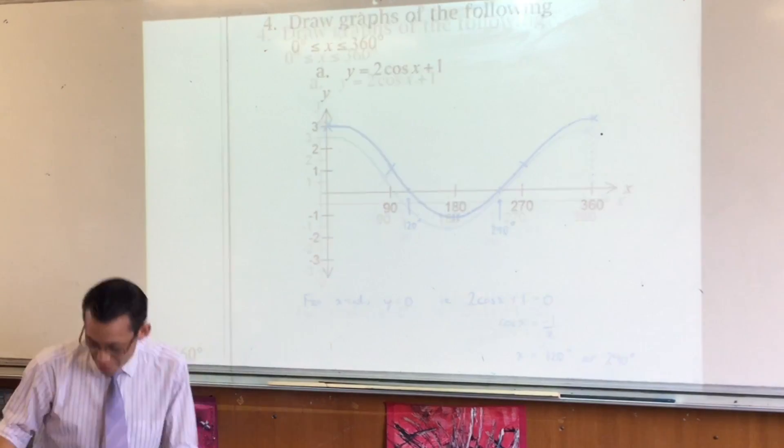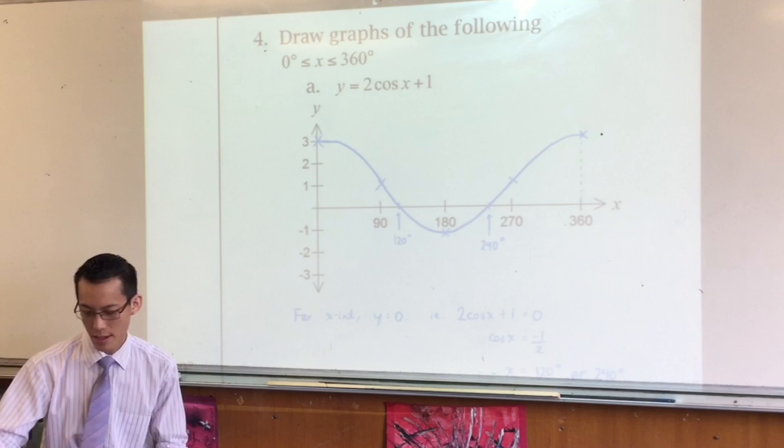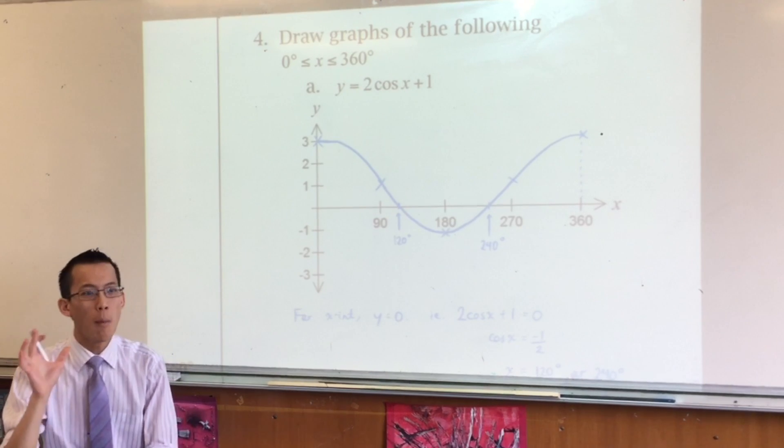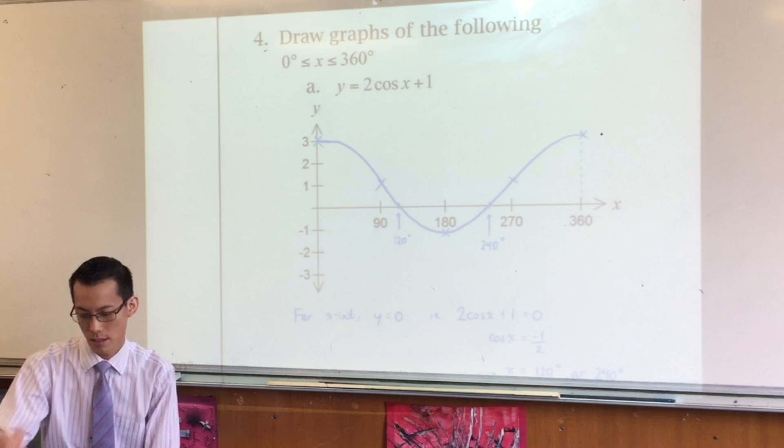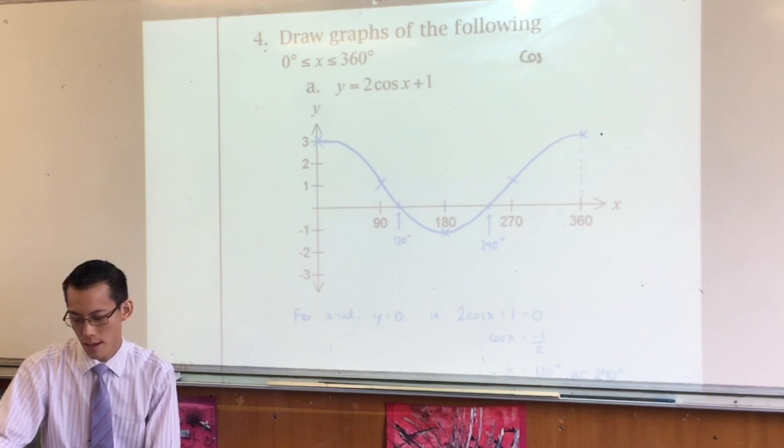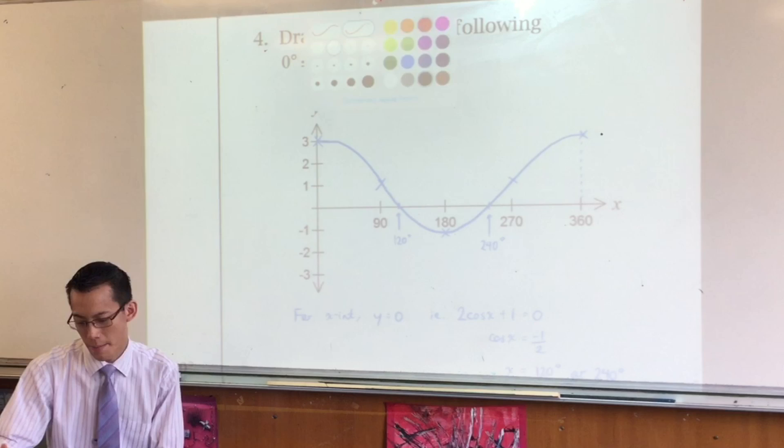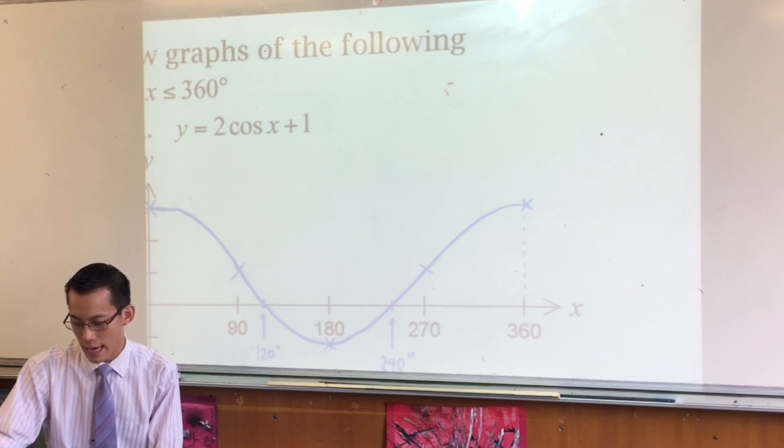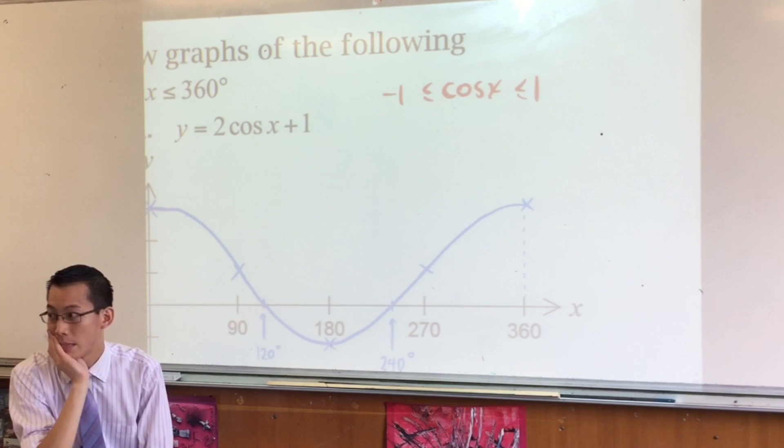Let's look at these graphs, shall we? Now 2cos(x) + 1. The normal range of cos(x) is what normally?